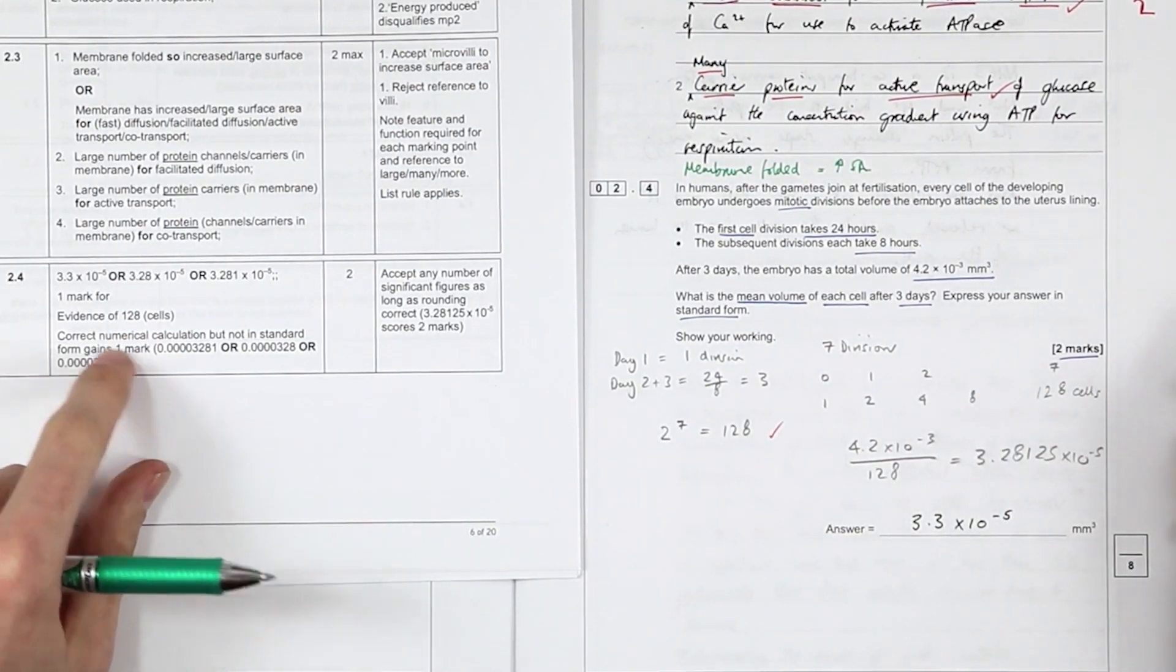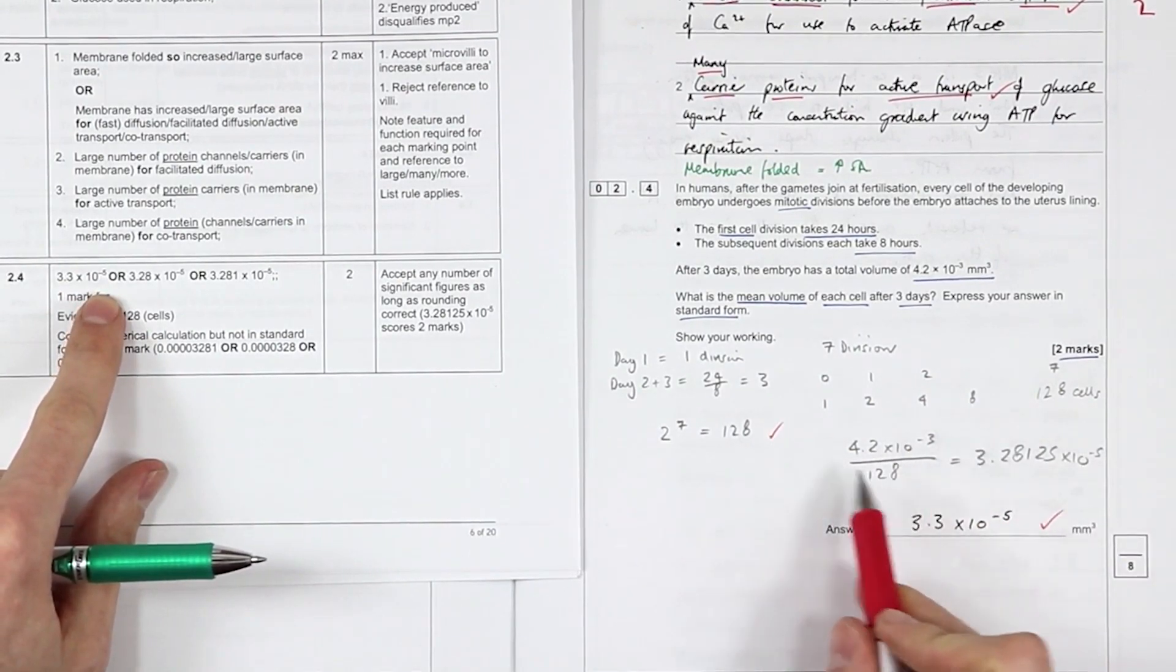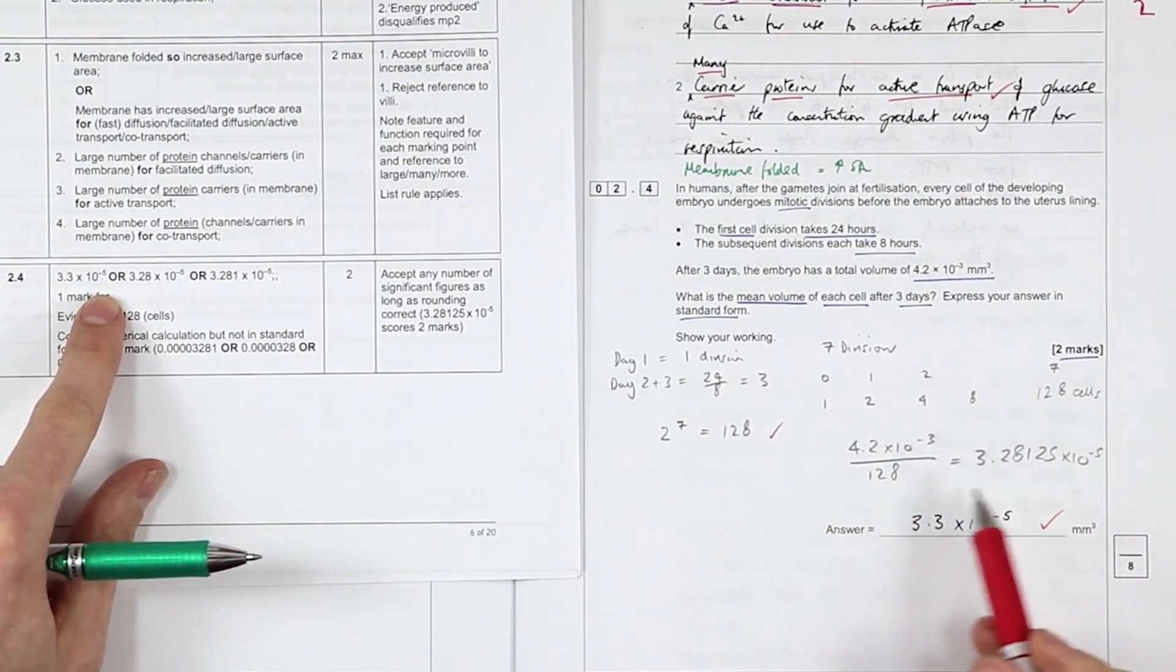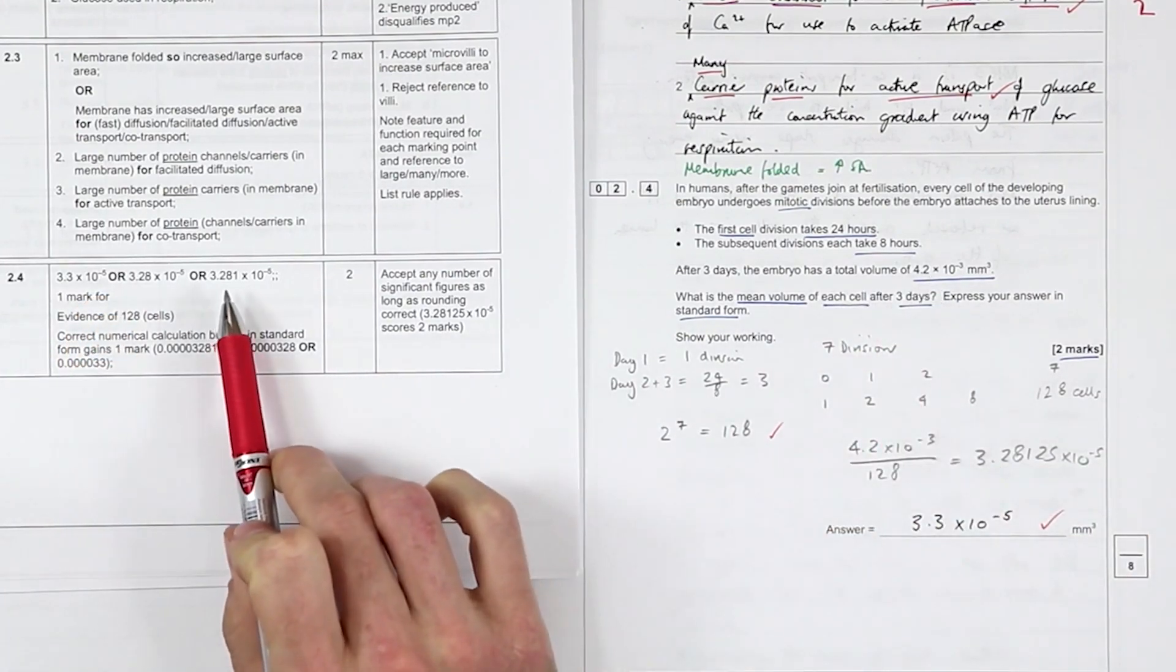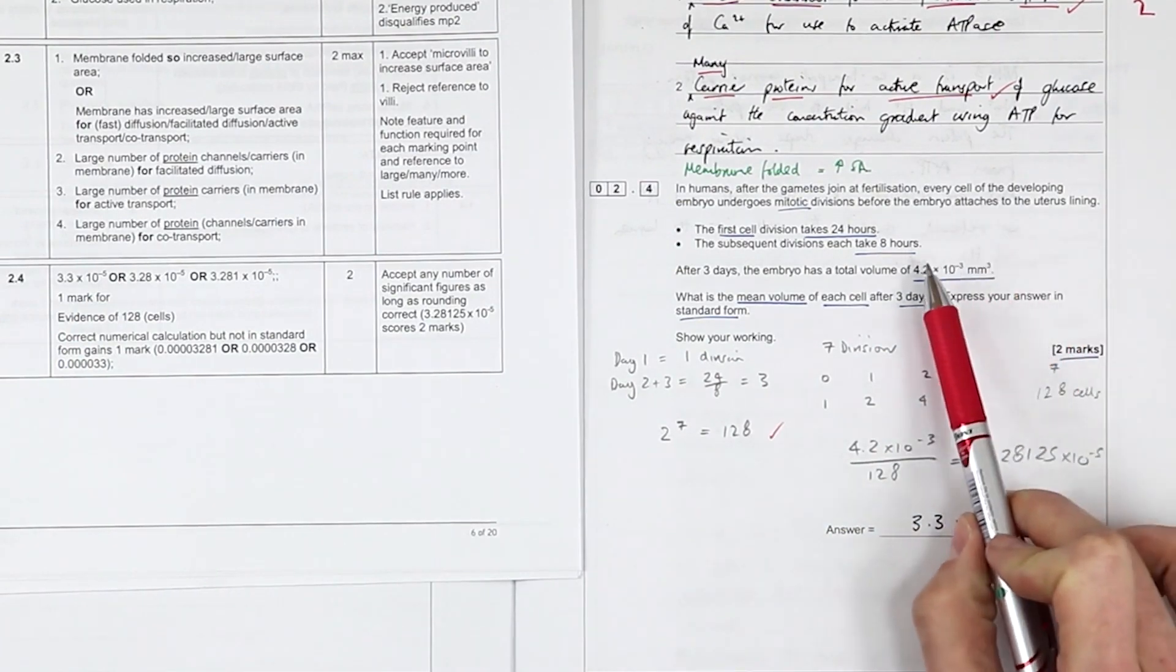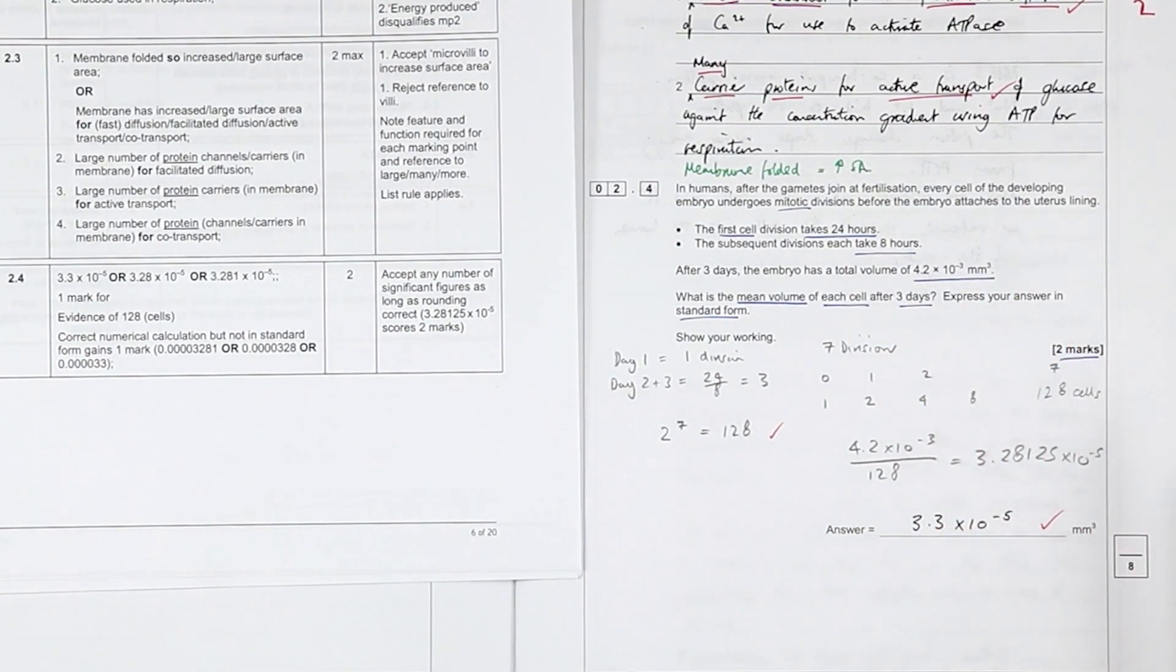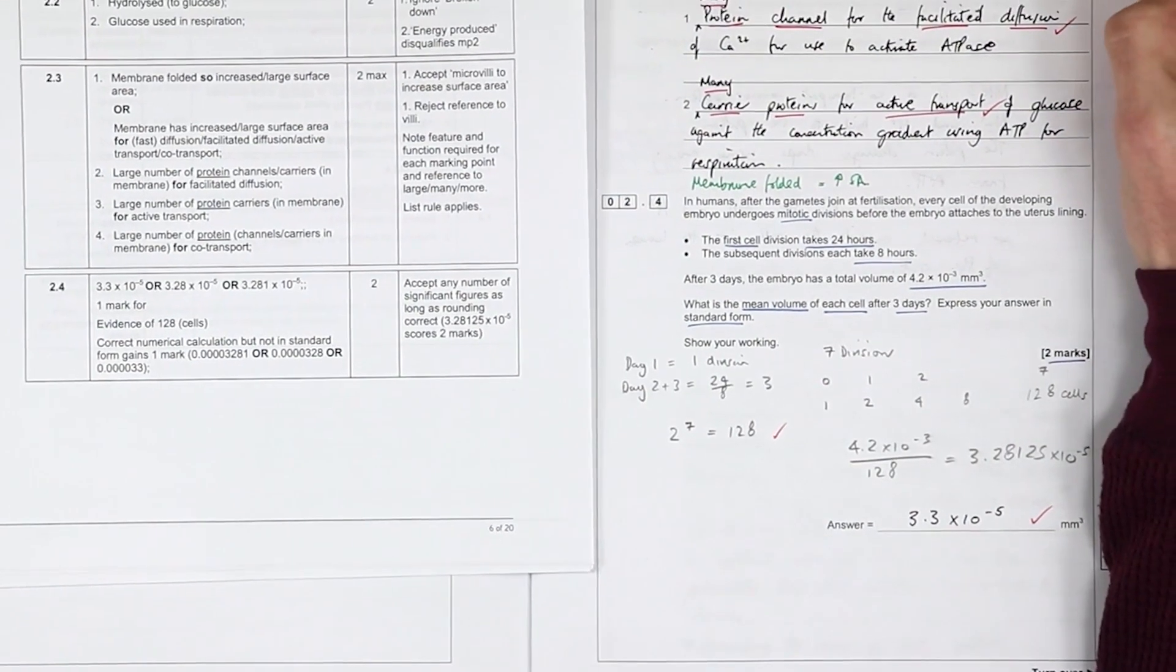And we've got 3.3 × 10^5, and we just divide the total volume by the number of cells to give us one cell. Obviously we're going to give the answer with the same number of decimal places. It will actually accept, interestingly, a greater number of decimal places even though the standard is we use the same as is used in the question. That is a further two marks, giving four total there.